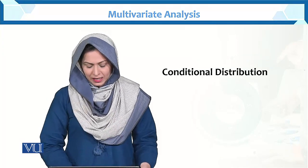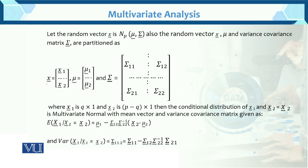This is the basic definition of the conditional distribution. Let the random vector x, where x has the multivariate normal distribution with mean vector mu and variance-covariance matrix sigma. Here x is partitioned as x1 and x2. The dimension of x1 is q×1 and the dimension of x2 is (p−q)×1.